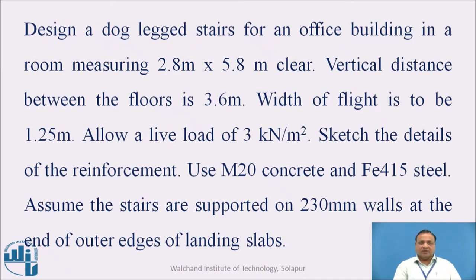This is the example. Design a dog-legged stair for an office building in a room measuring 2.8 meter by 5.8 meter clear. The vertical distance between the floors is 3.6 meter. Width of flight is to be 1.25 meter. Allow a live load of 3 kN per meter square. Sketch the details of the reinforcement. Use M20 concrete and Fe415 steel. The stairs are supported on 230 mm walls at the end of the outer edge of the landing slab.